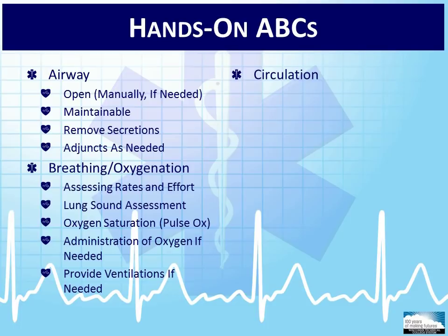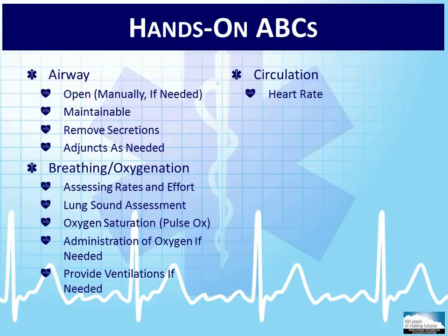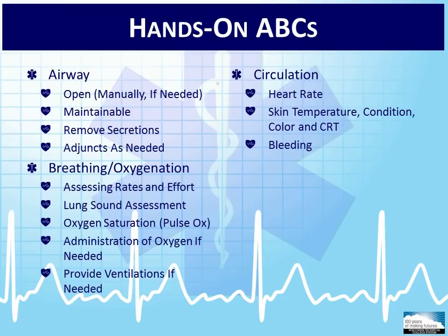Assessment of the patient's circulation includes checking the heart rate both centrally and peripherally, along with pulse rates, quality, and regularity. Assessing circulation to the skin includes checking a general temperature to determine if it is cool, warm, or normal, and feeling the condition of the skin to determine if it is dry, clammy, or diaphoretic. Look at the general color of the skin to determine if it is normal, pale, flushed, or otherwise abnormal. Capillary refill time is commonly used in the younger patient to determine adequacy of perfusion. Do not forget to look for any uncontrolled active bleeding. The last part of the circulation assessment would be to obtain a blood pressure if the child is over the age of three.